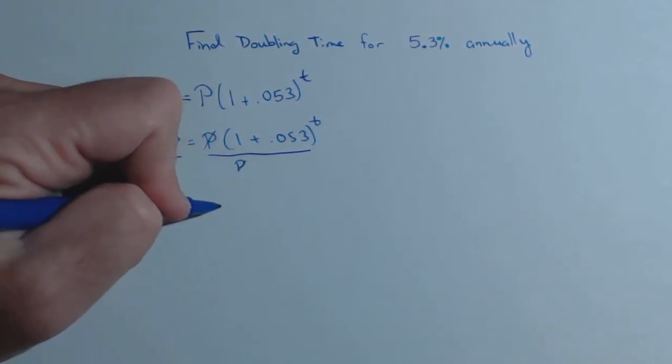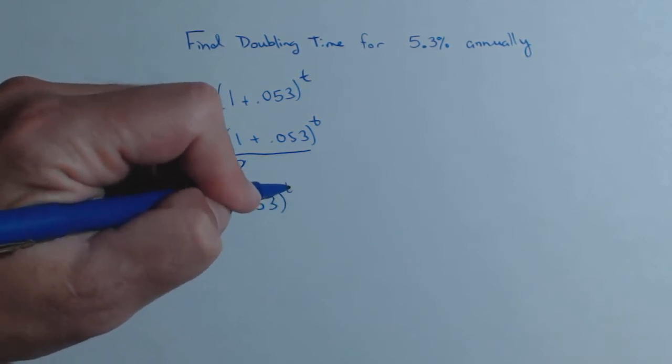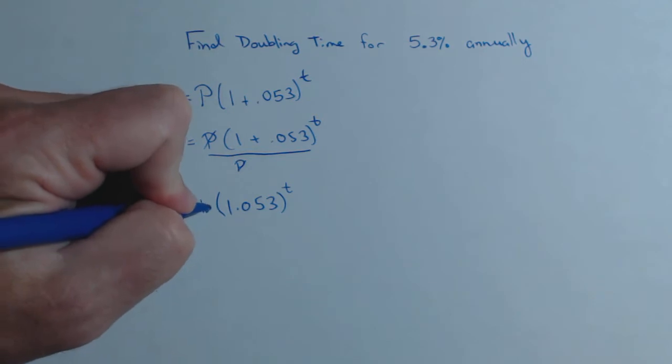So I get a little exponential equation, 2 equals 1.053 to the t. We could solve this with logs.